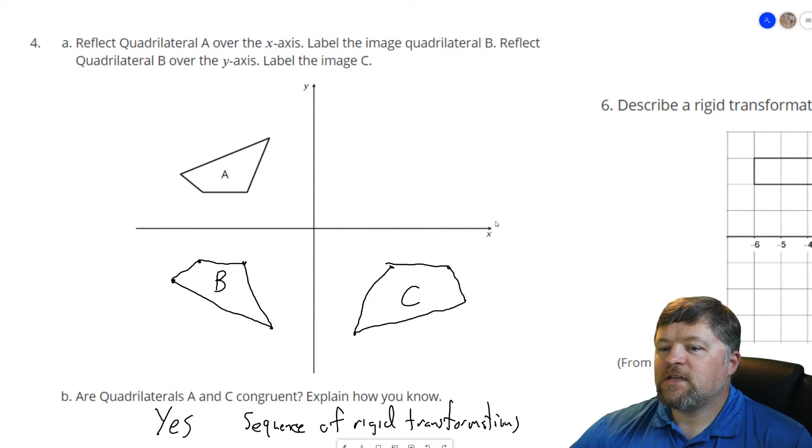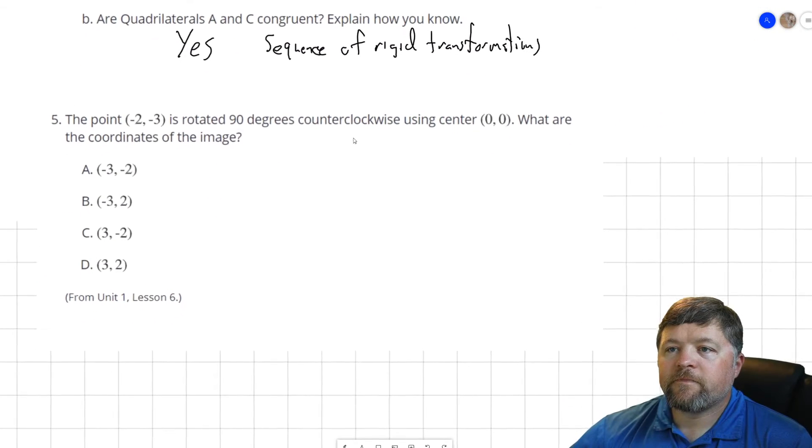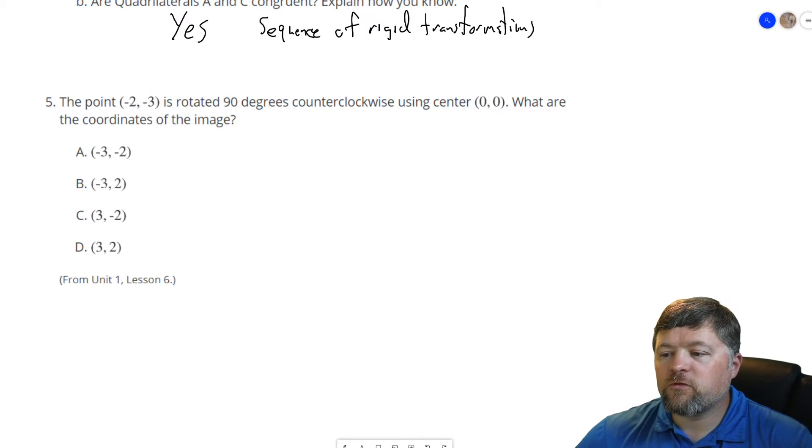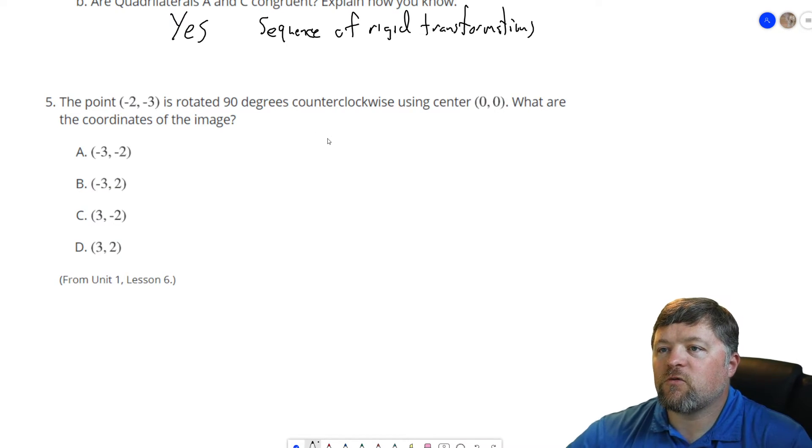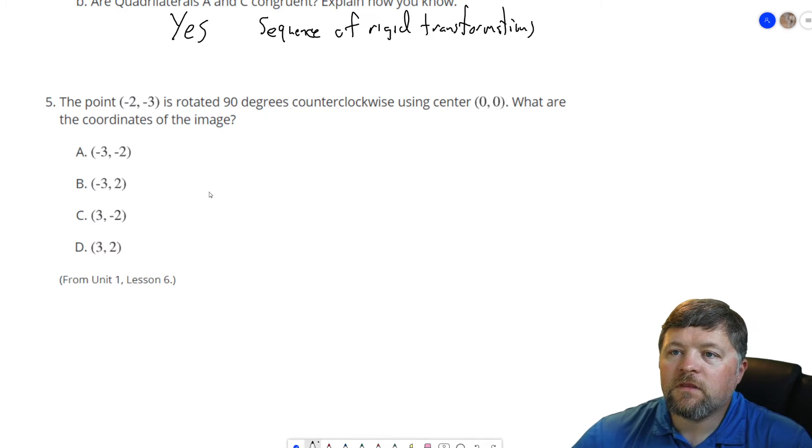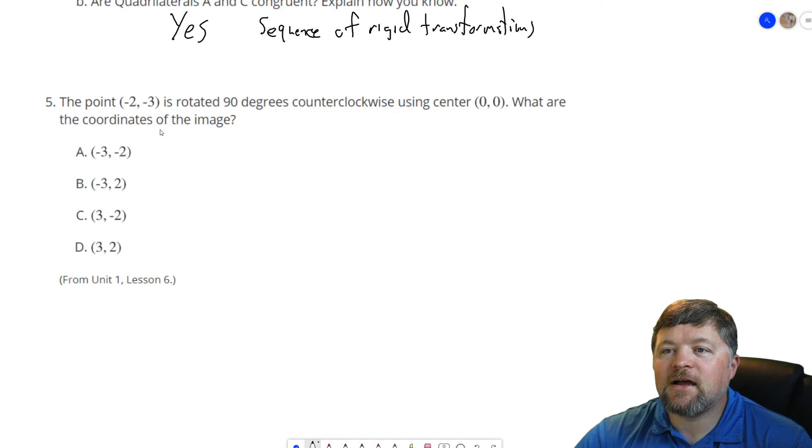Okay, what question is next? Next, the point (-2, 3) is rotated 90 degrees counterclockwise using the center of the origin (0, 0). What are the coordinates of the image? So as we know from last time, 90 degree rotation means these are going to swap places and there's going to be some changes in the signs.